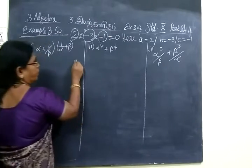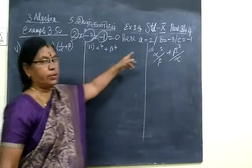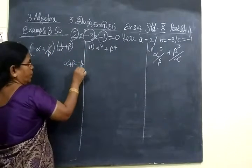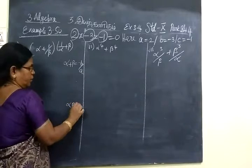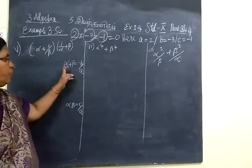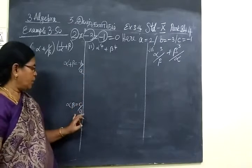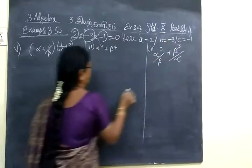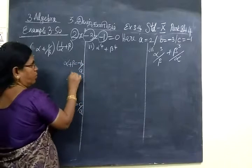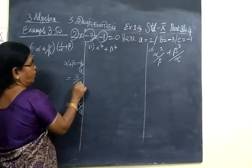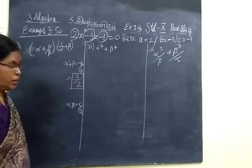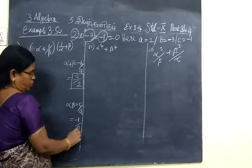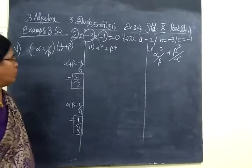Here A equals 2, B equals minus 3, C equals minus 1. Alpha plus beta equals minus B by A, and alpha times beta equals C by A. That we know — sum of roots is minus B by A, product of roots is C by A. So minus of minus 3 gives plus, so alpha plus beta equals 3 by 2. Alpha times beta: C is minus 1, A is 2, so alpha beta equals minus 1 by 2.